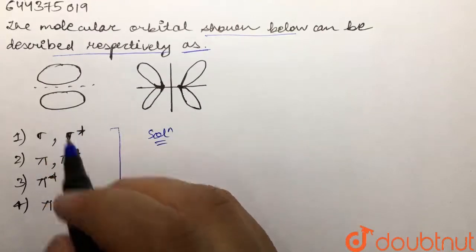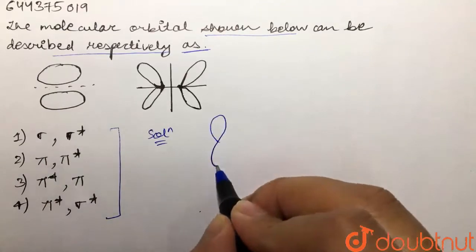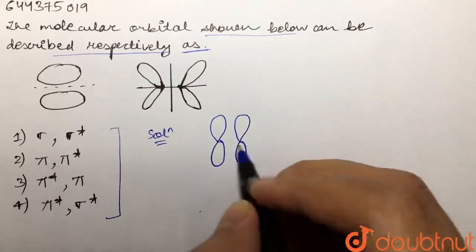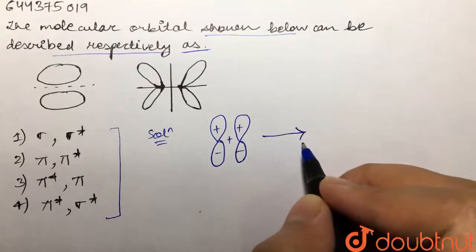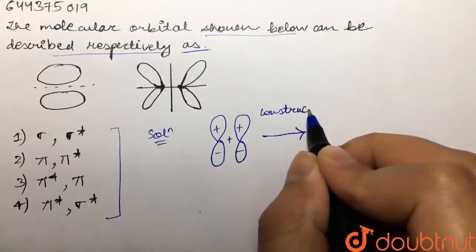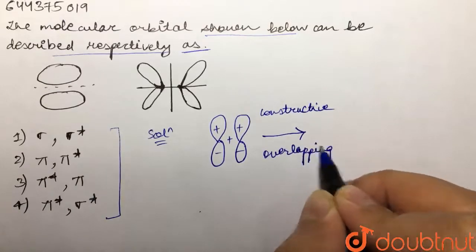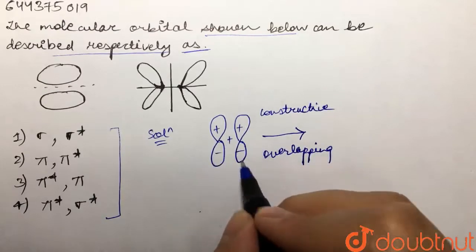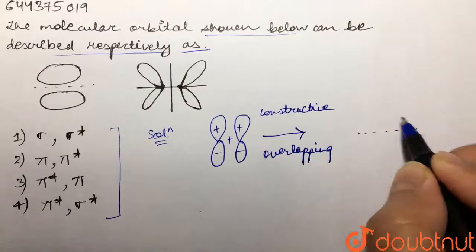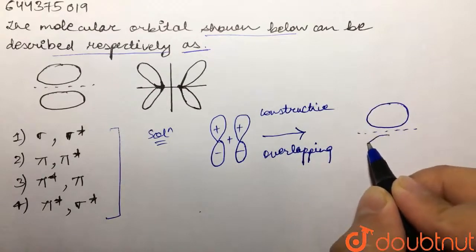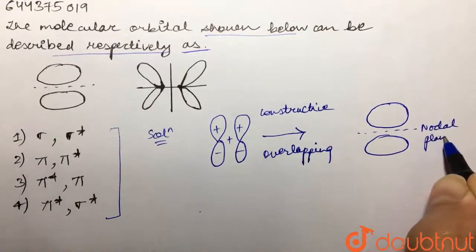In the first case, this molecular orbital is formed by the sidewise overlapping of p orbitals. For example, we have these two p orbitals — when they add in a constructive way, there is constructive overlapping, because the positive phase is adding with positive and the negative phase is adding with negative.